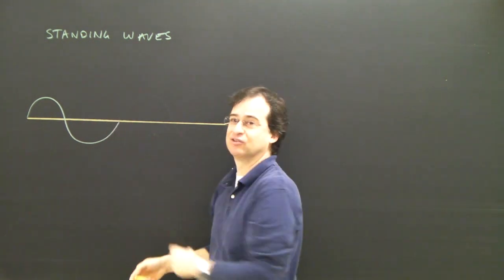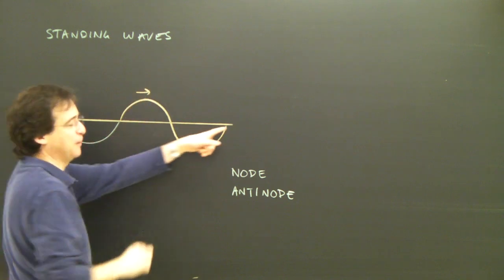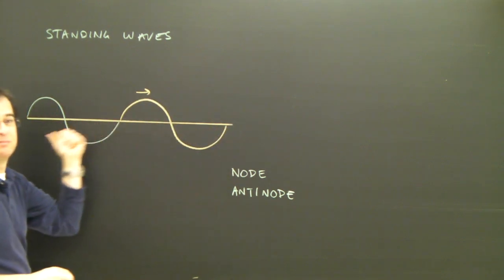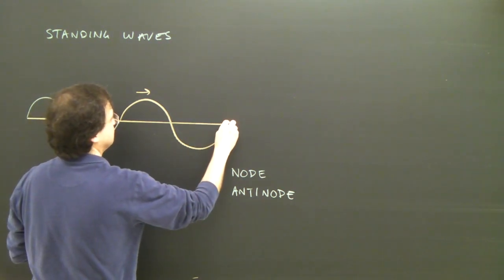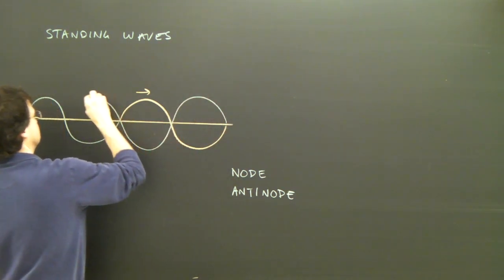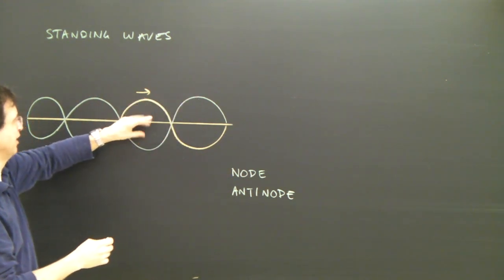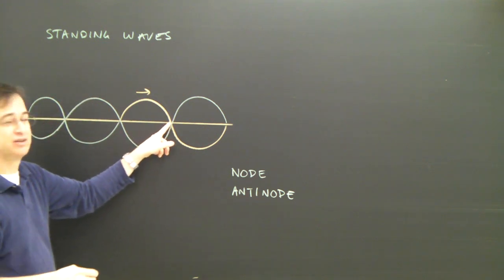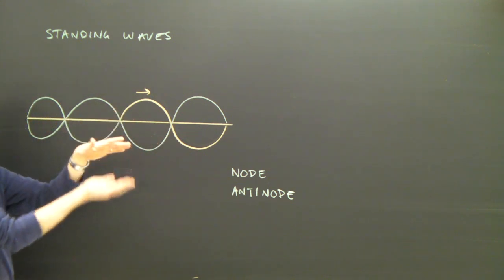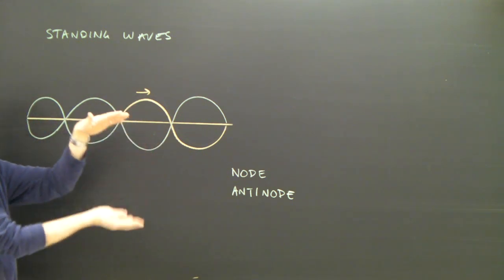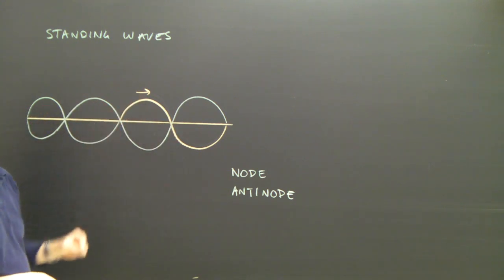If the wave I'm sending looks like this, then as that wave works its way over to the other side, it gets over to here, reflects, and comes back. When it comes back, at some point it'll look like this. What you'll see is the guitar string vibrate up and down at multiple points, but at certain points the guitar string will be sitting still. So it's called a standing wave — a string vibrating up and down, with waves continually moving along it, but it just looks like the string is vibrating up and down.